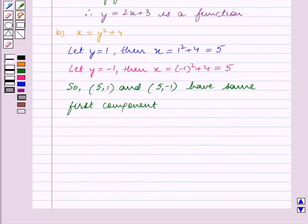We know that the condition for a relation to be a function is that no two ordered pairs in the relation should have the same first component. Therefore x equals y squared plus 4 is not a function.